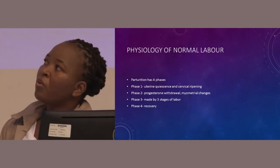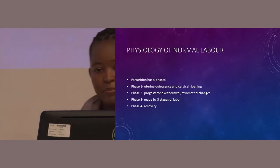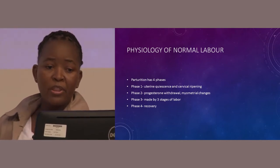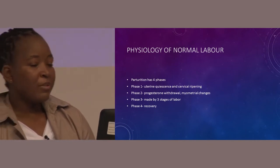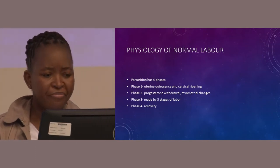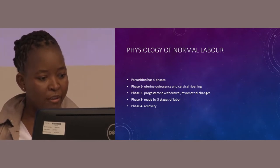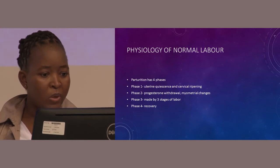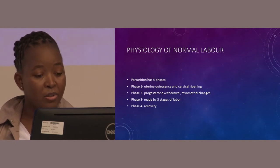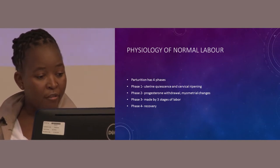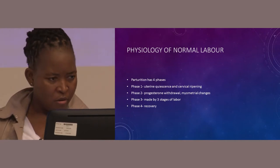Before we go into the management of labor, I'd like us to briefly review the physiology of normal labor. I'll start by dividing parturition itself into four phases. The first phase being the most part of the pregnancy itself — like 95% of the pregnancy. This is followed by phase two where we start seeing changes. Phase three is mostly the three stages of labor, and that is followed by phase four, which is recovery, or what we normally call the fourth stage of labor.